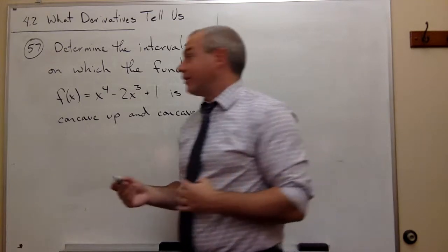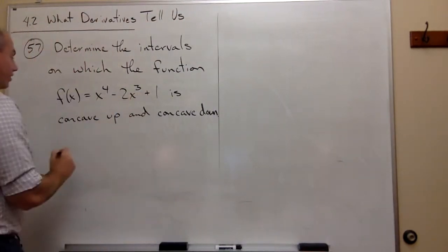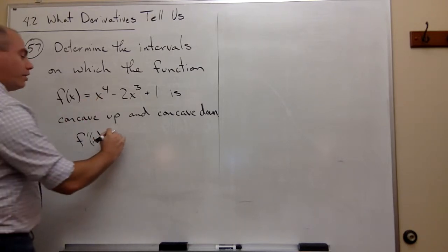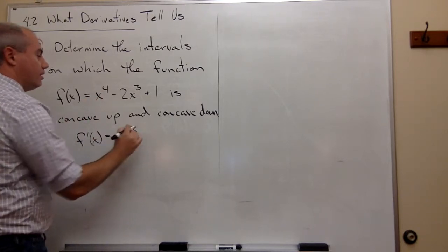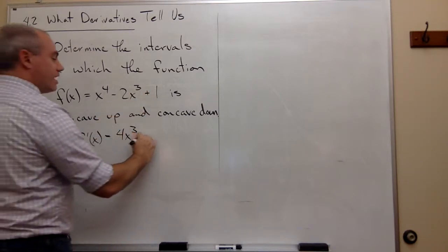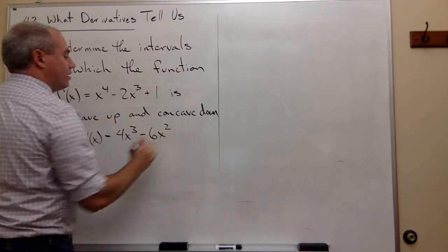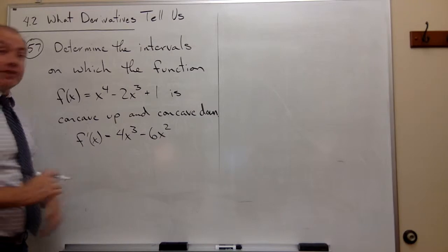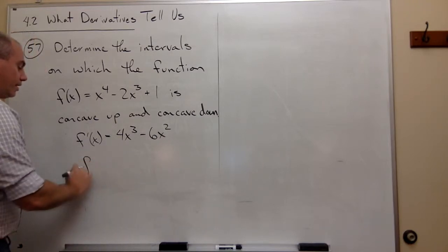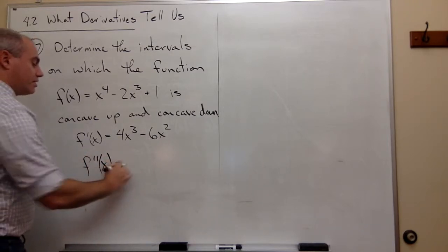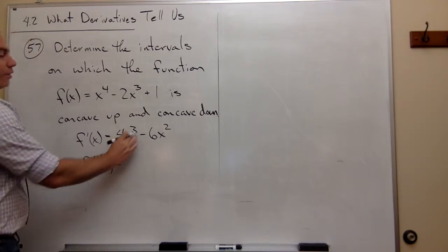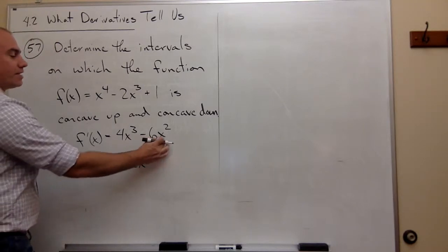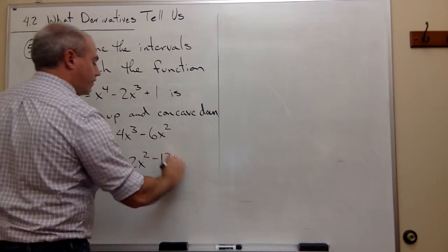First we need the second derivative. I have my function, so I take a first derivative: the derivative of x to the fourth is 4x cubed, the derivative of negative 2x cubed is negative 6x squared, and the derivative of 1 is 0. That's my first derivative, but I need the second derivative, so let's do it again. f double prime of x equals the derivative of 4x cubed, which is 12x squared, and the derivative of negative 6x squared, which is negative 12x.